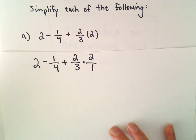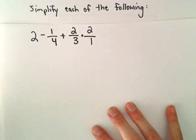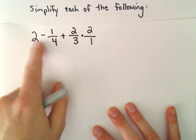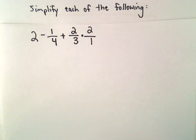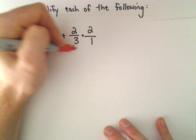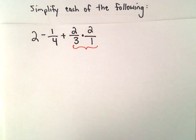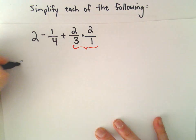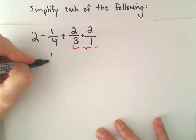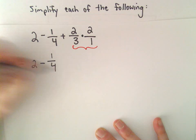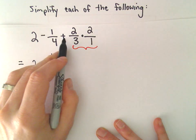We have to do our order of operations. We've got subtraction, we've got addition, but then we have multiplication. So multiplication is the operation we'll do first. Everything else just drops right down: we've got our 2, we've got our minus, we've got our 1 fourth.